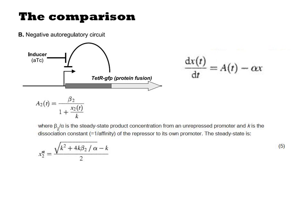Again, we make a steady state assumption and solve for X and get this expression. If the repressor has very strong affinity for its binding site, then beta over alpha will be much greater than K, and the math simplifies to the square root of K beta over alpha.